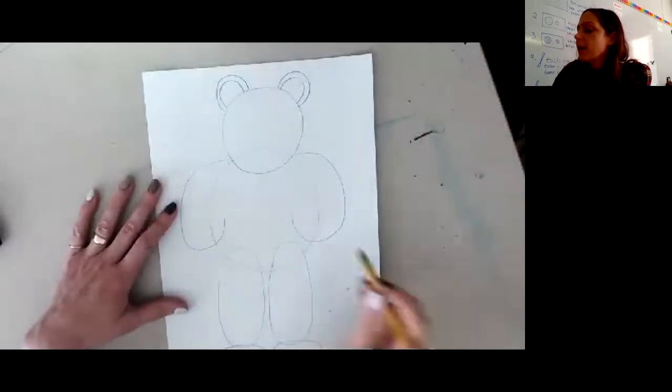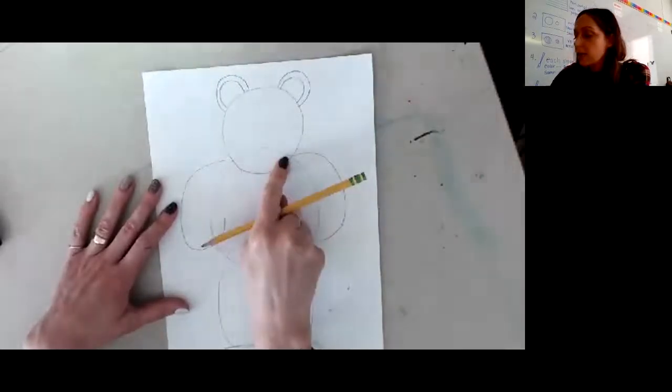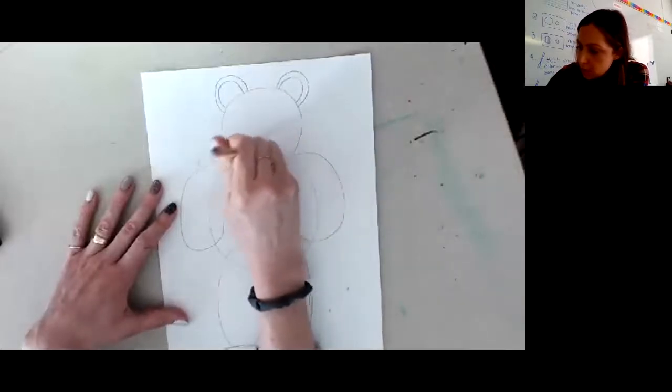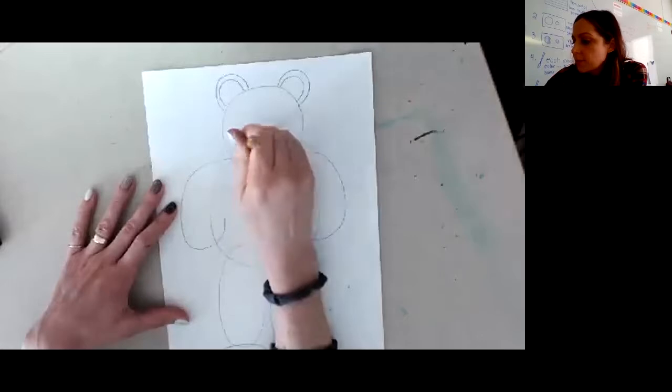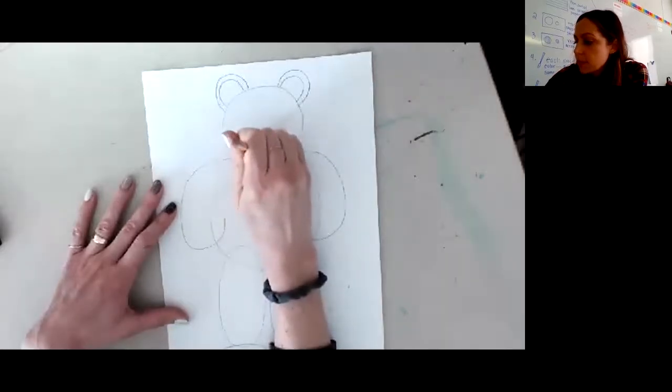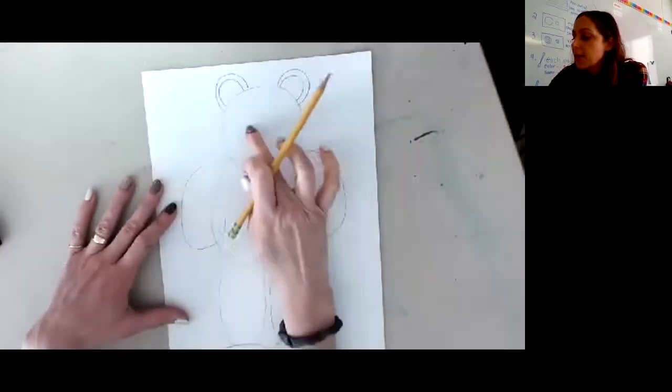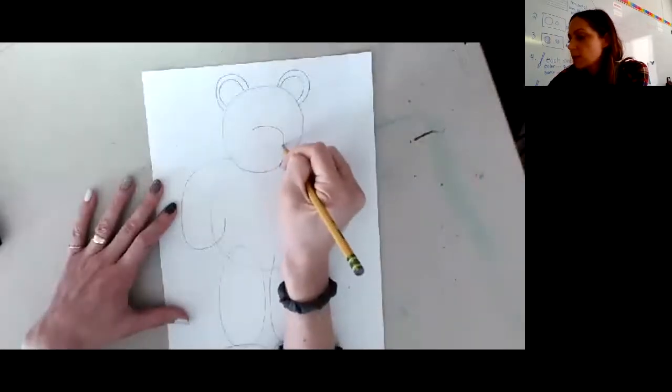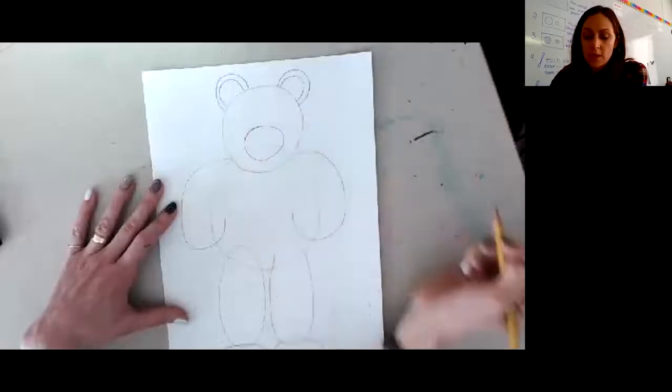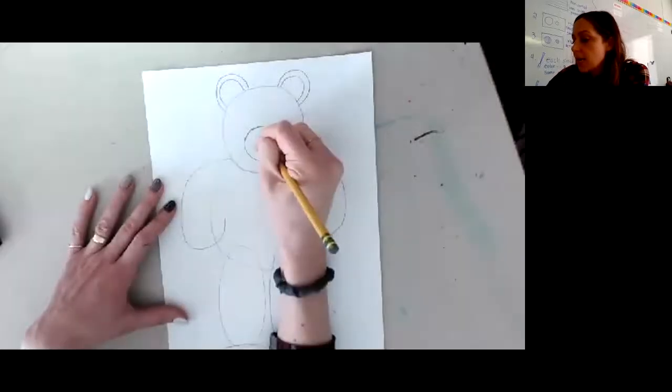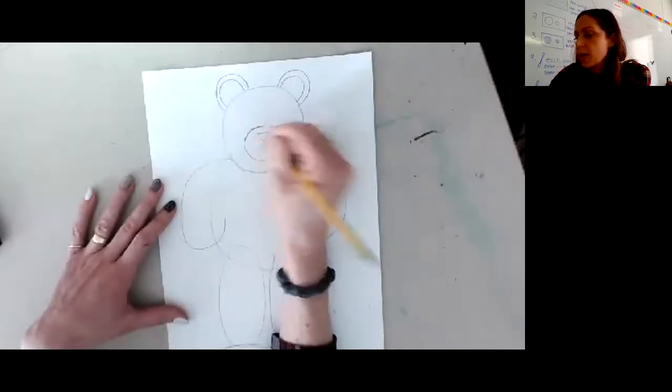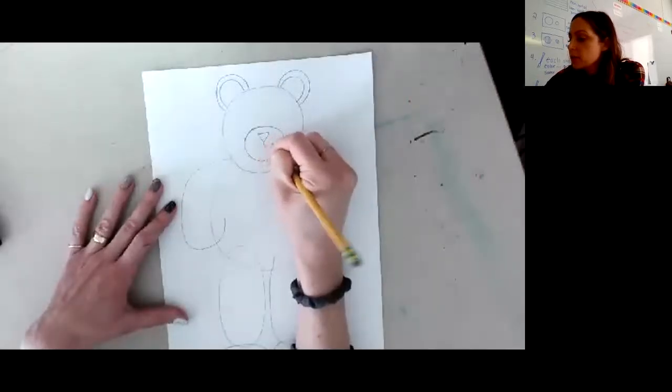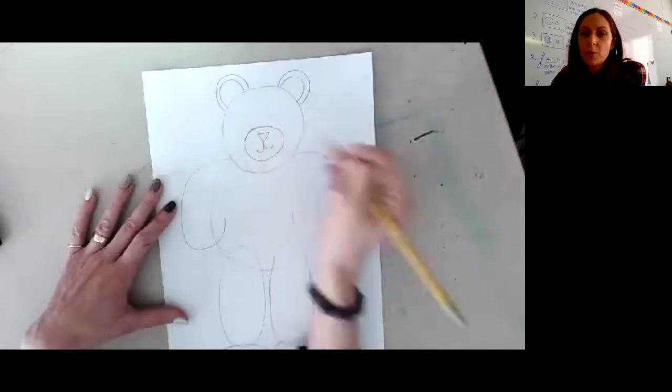Right now I'm going to erase this line right here. So I'm just going to use my eraser. I'm going to erase that line. A little smudging. Because I'm going to make another circle for my bear's nose. And then a little curve line coming down around the front.